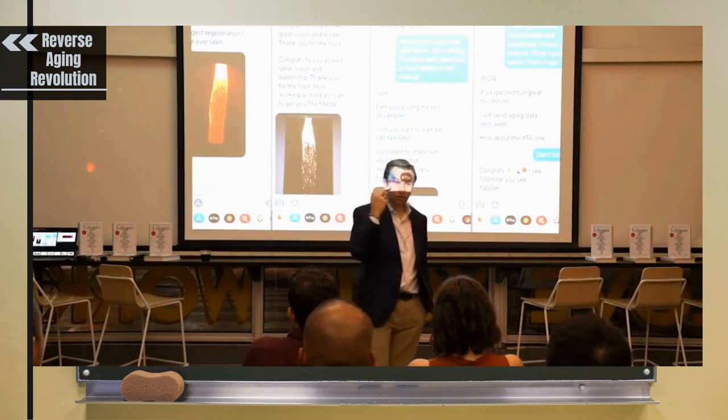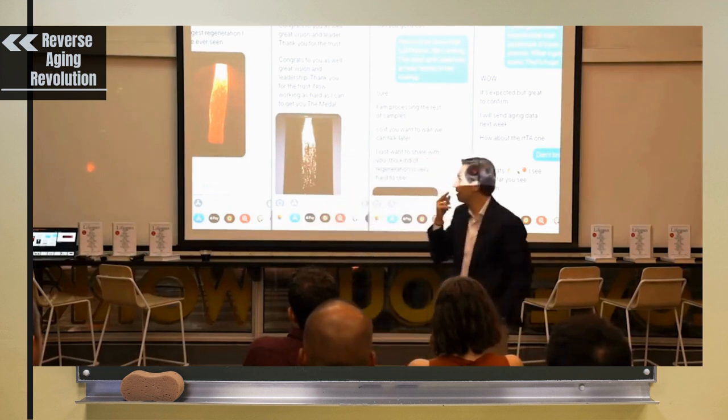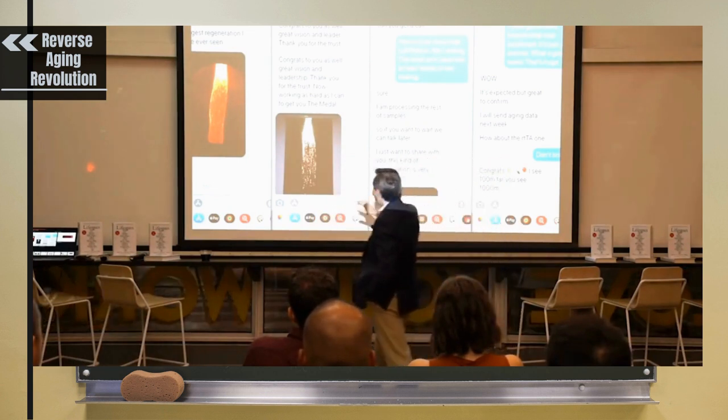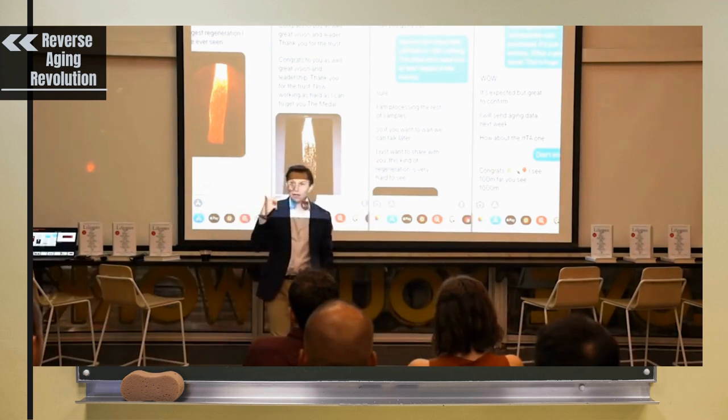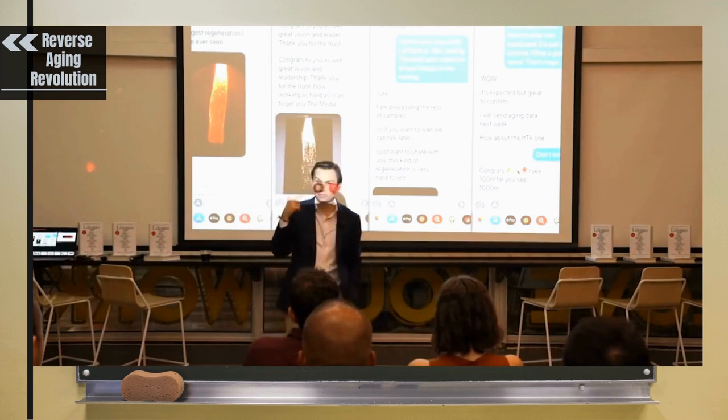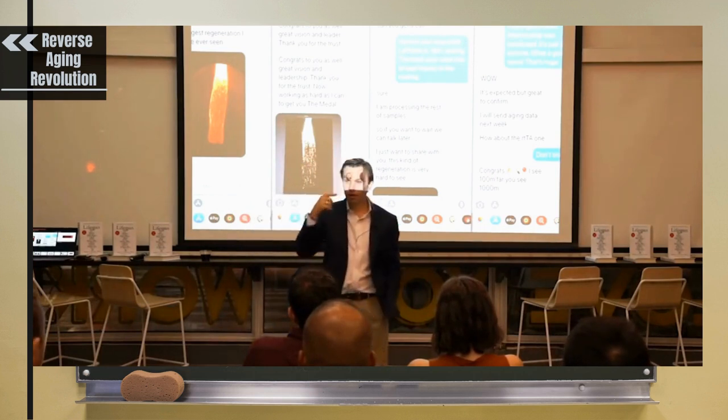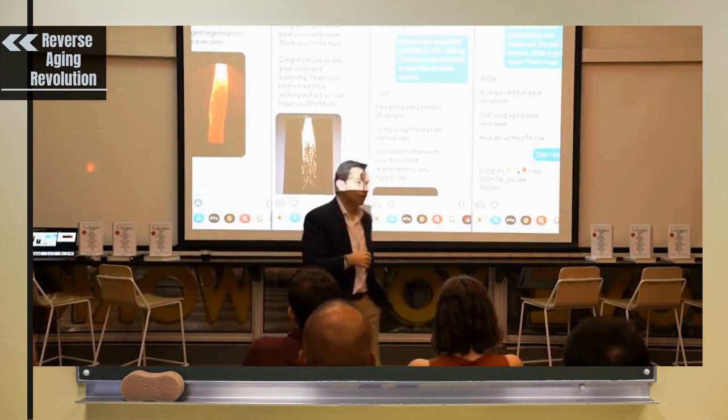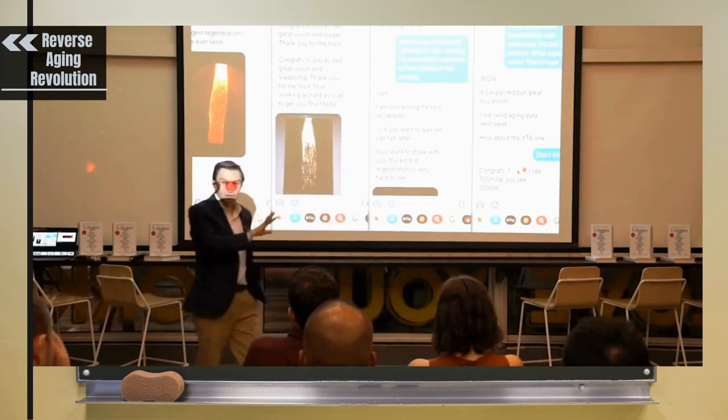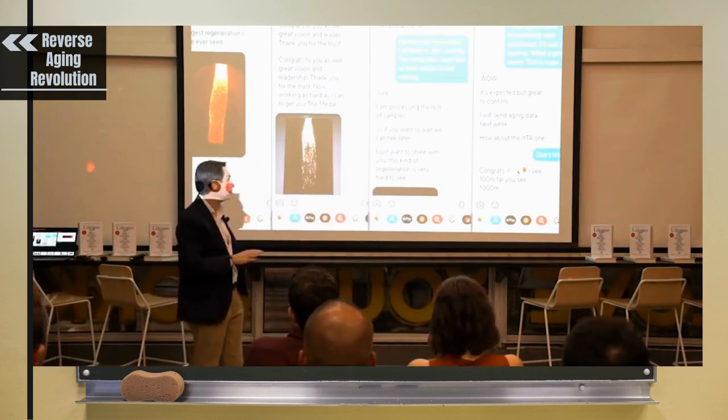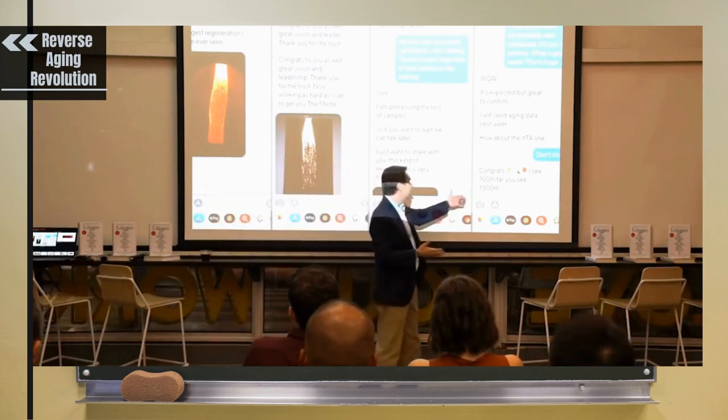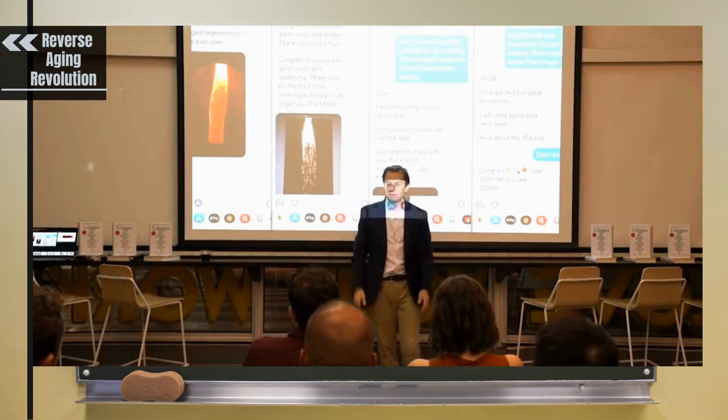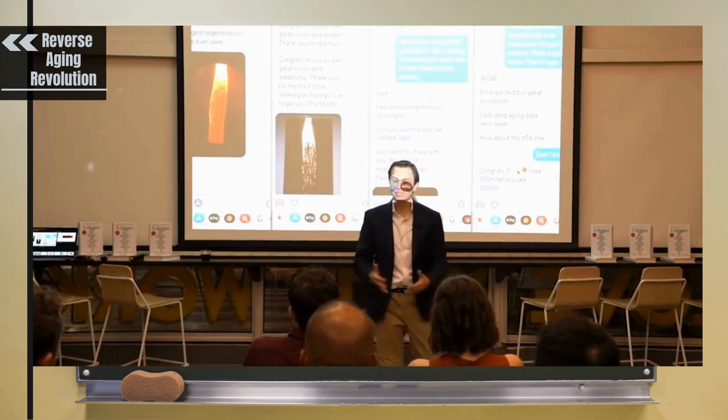And so what you're seeing are pictures for the first time that he was sending me of regenerating optic nerves in mice. So we had damaged the back of the eye, and here we have the regrowth of something that has no business regrowing in an adult mouse. But it was one of those things where we're kind of celebrating that we've made a big discovery.